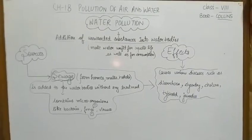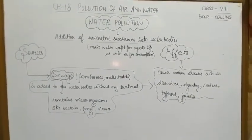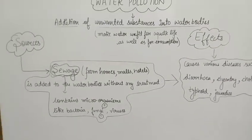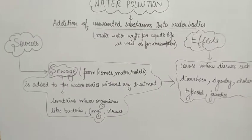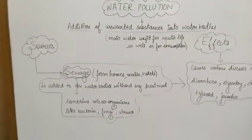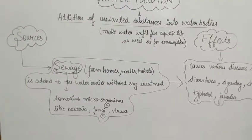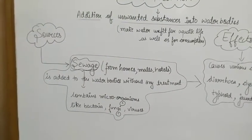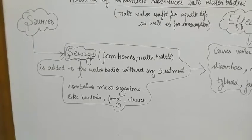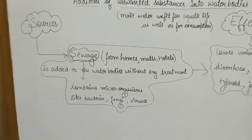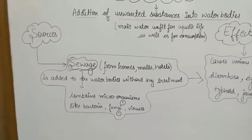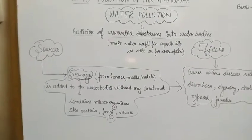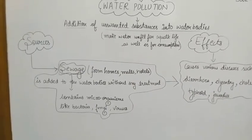To look at the sources and effects of water pollution, the first source is sewage. From homes, malls, hotels, and all our working infrastructures, the daily sewage waste is directly added into water bodies without any proper treatment. This means the harmful substances in sewage are added to water bodies without being reduced or treated. This sewage contains many microorganisms such as bacteria, fungi, viruses, and parasites, which totally pollute the water body. Sewage is a major problem for polluting water sources.